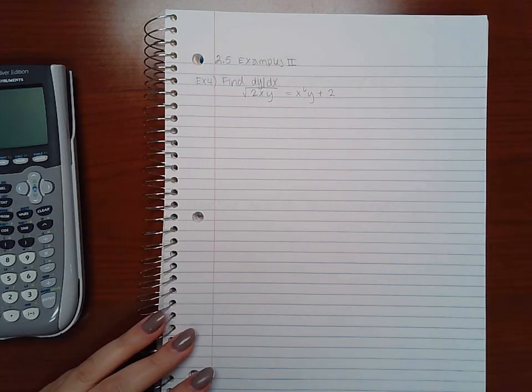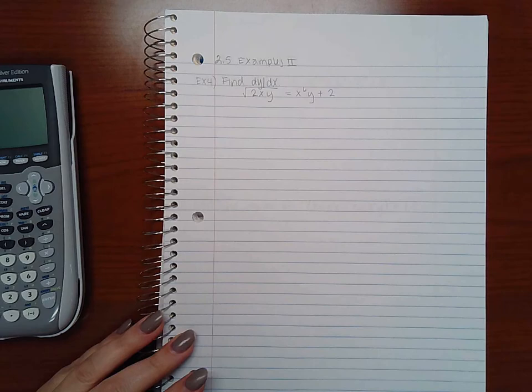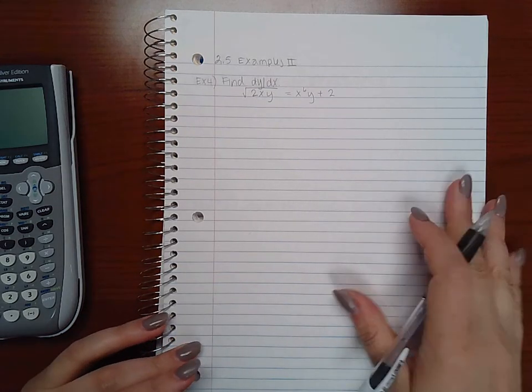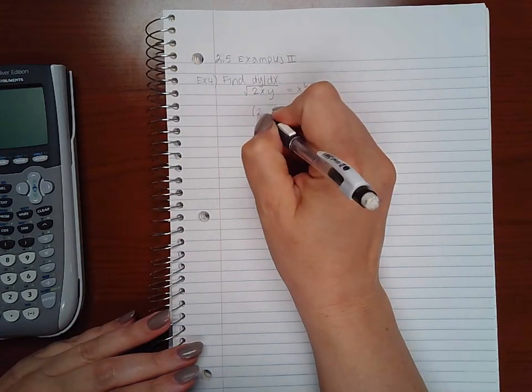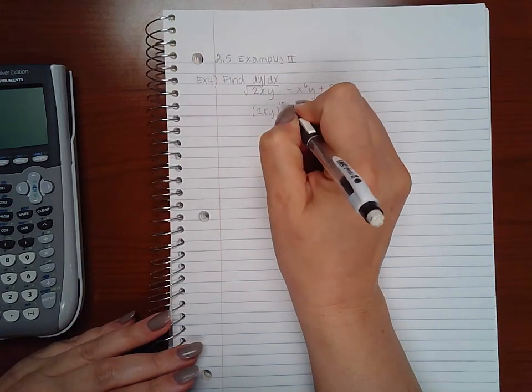In this problem we will be doing implicit differentiation again. So for here we first need to start off writing our radicals as always as an exponent.